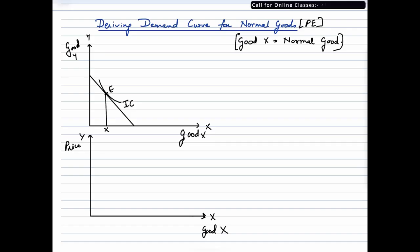you know, we are going to derive the demand curve for normal goods through price effect. Now in this case, good X, which is measured on the x-axis, is a normal good. We have good Y on the y-axis, and